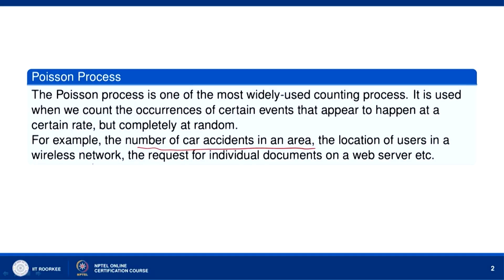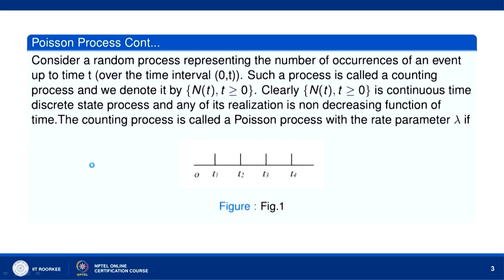For example, the number of car accidents in an area, the location of users in a wireless network, the request for individual documents on a web server. Consider a random process representing the number of occurrences of an event up to time t, that is over the time interval 0 to t. Such a process is called a counting process and is denoted by N(t), t ≥ 0.